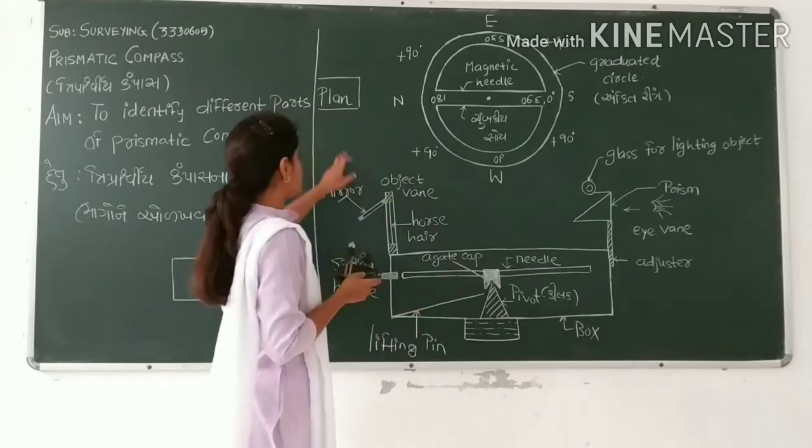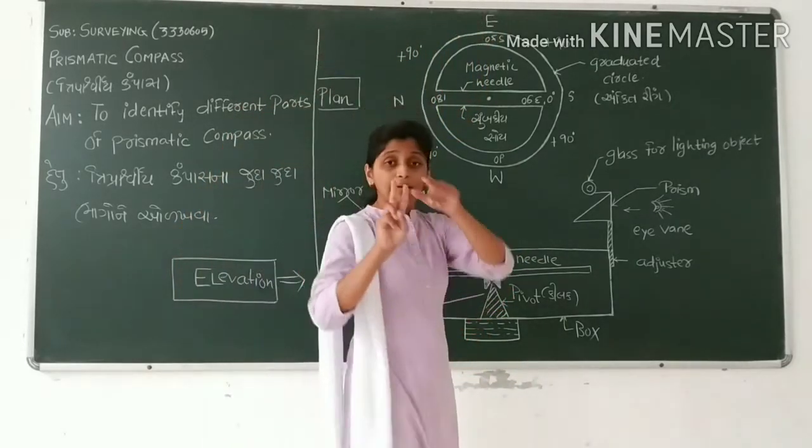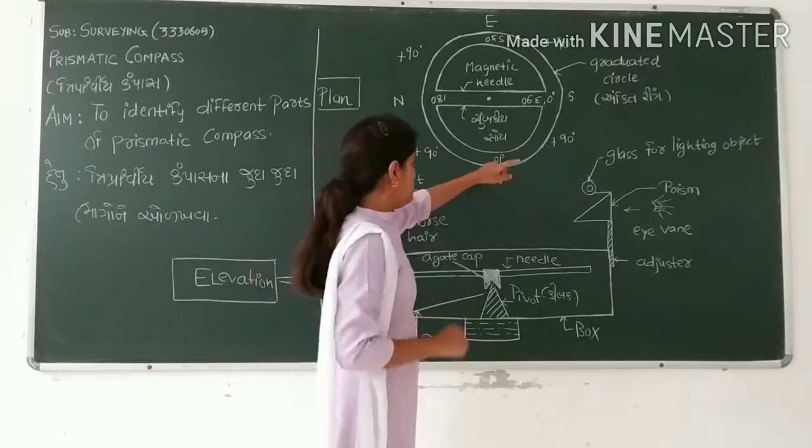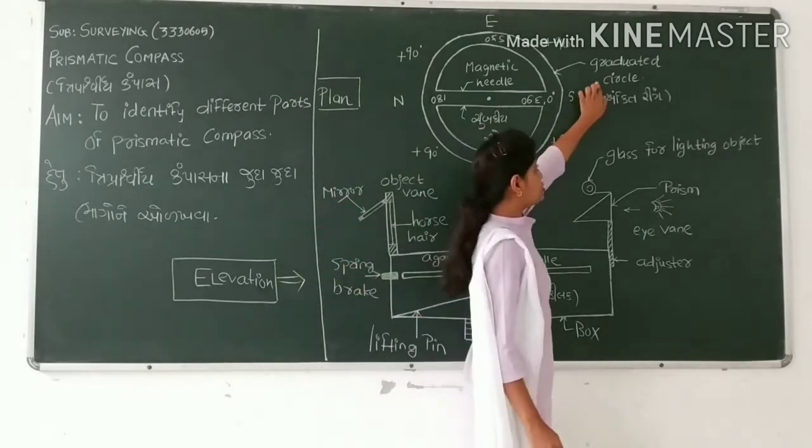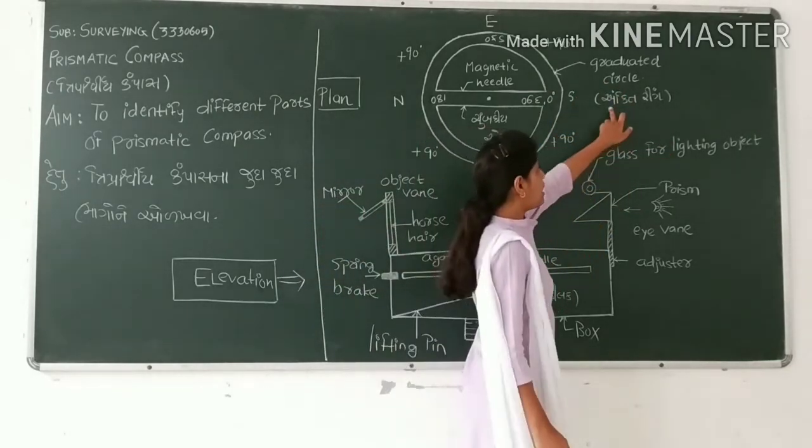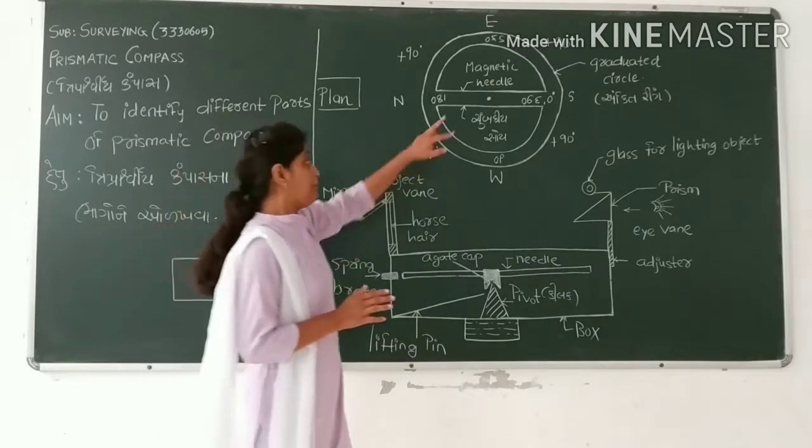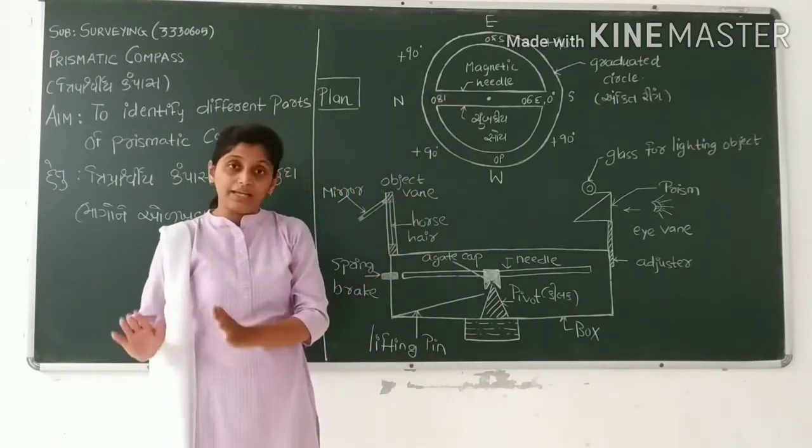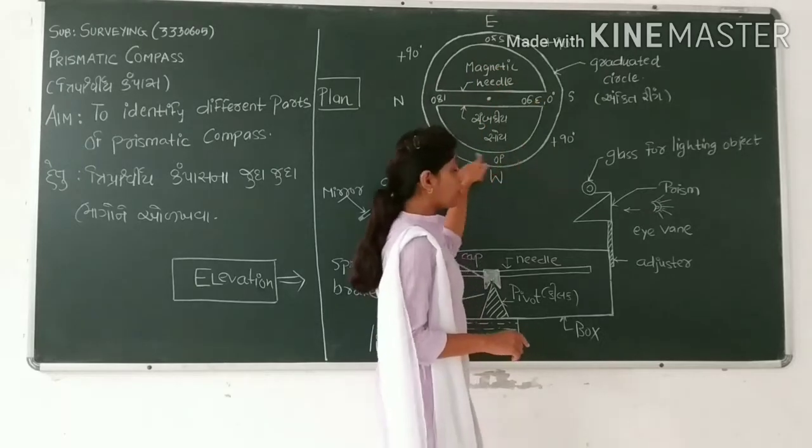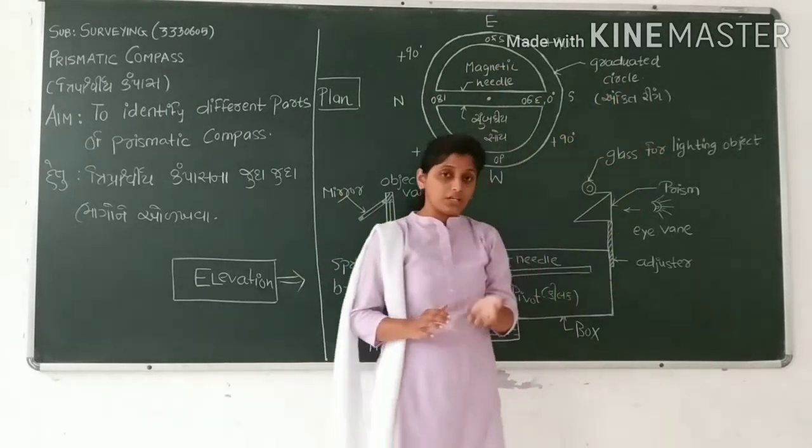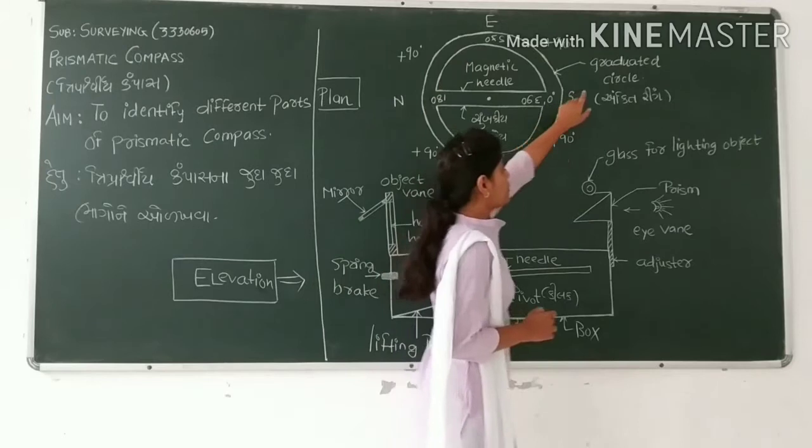So this is the plan. I'm going to show you a figure. So this is the board ring. The board ring is also called the graduated circle. Our plan has two main components and parts. This is the board ring, the graduated circle.